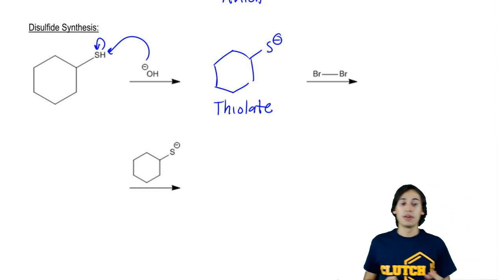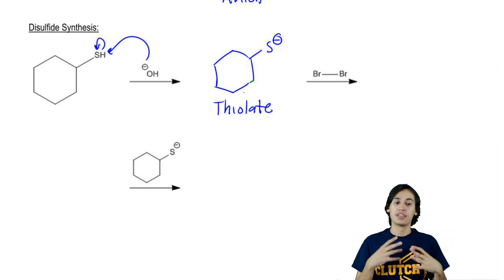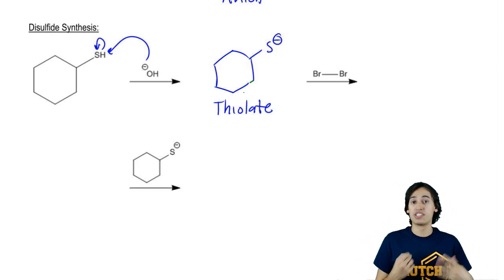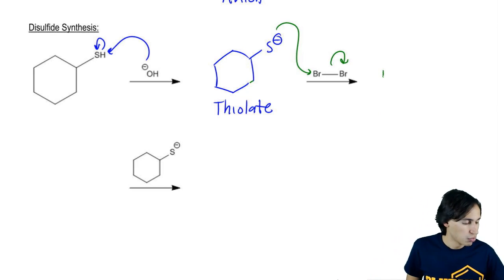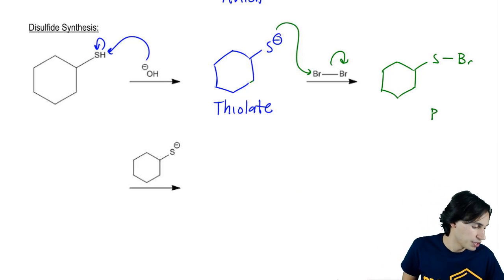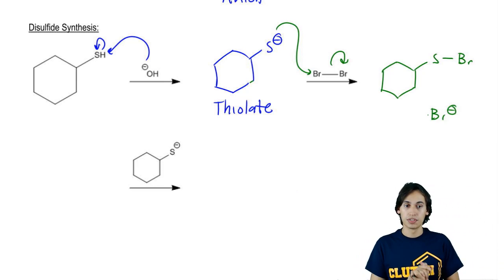So now I've got the thiolate. Now I expose that to a diatomic halogen. And this is interesting. The diatomic halogen is going to be able to be attacked. So my sulfur will grab one of the Brs, kick the other one out. What I wind up getting is something that looks like this where I've got sulfur, Br. And then I've got a Br negative just hanging out. Cool so far? Awesome.